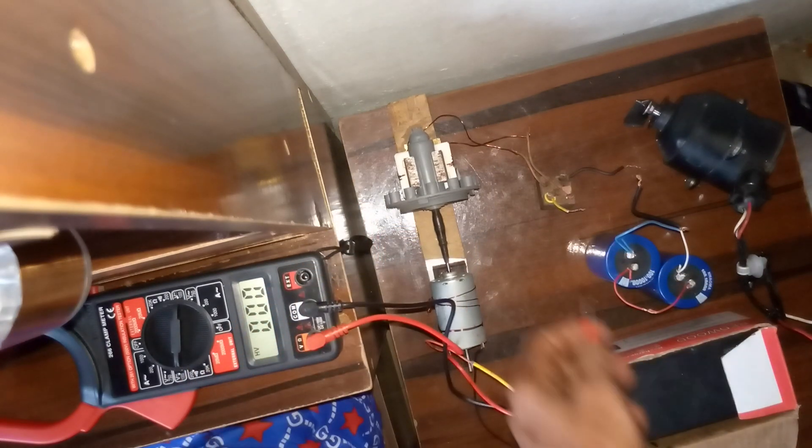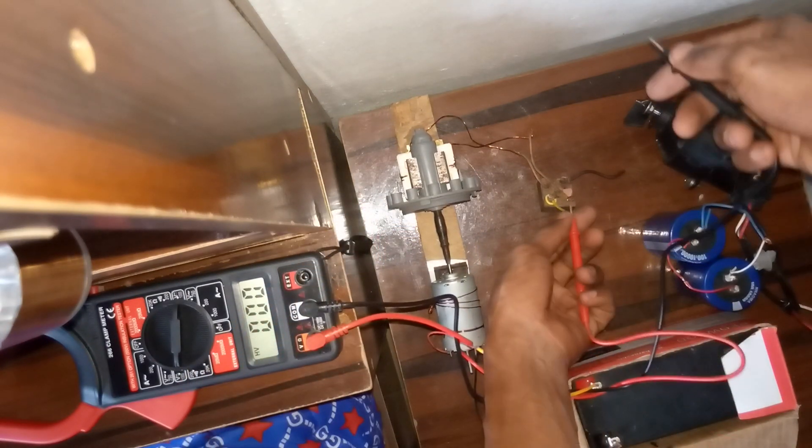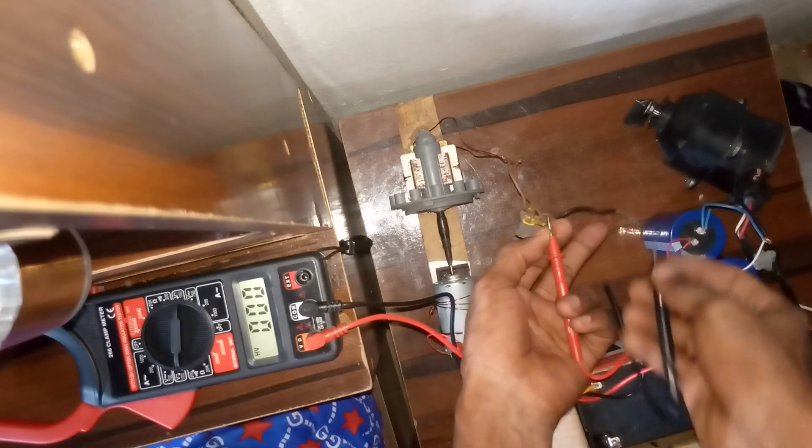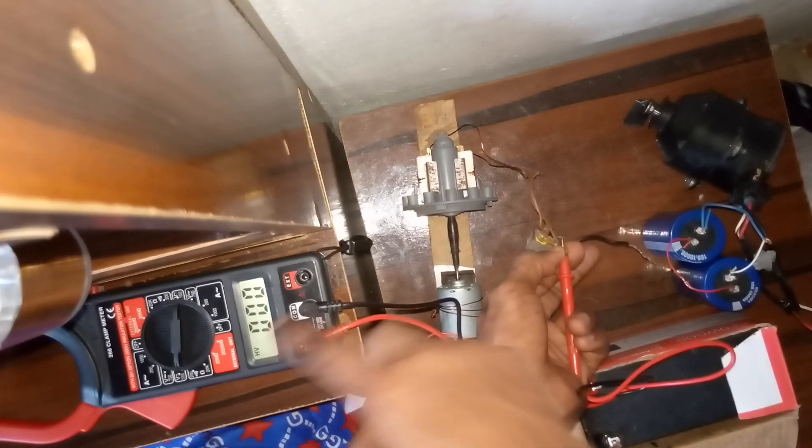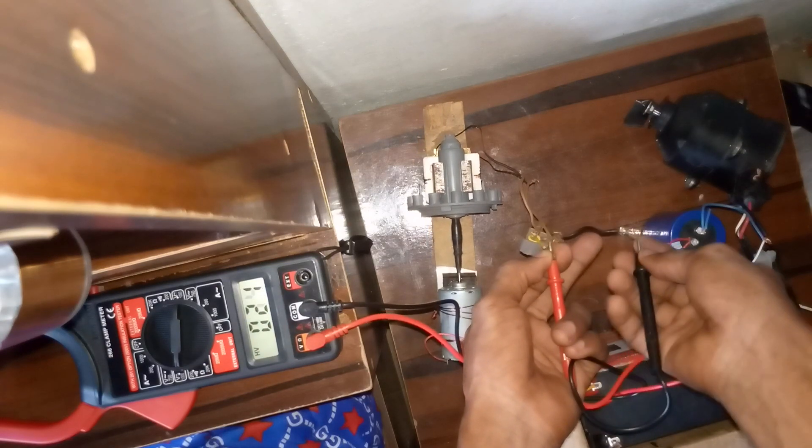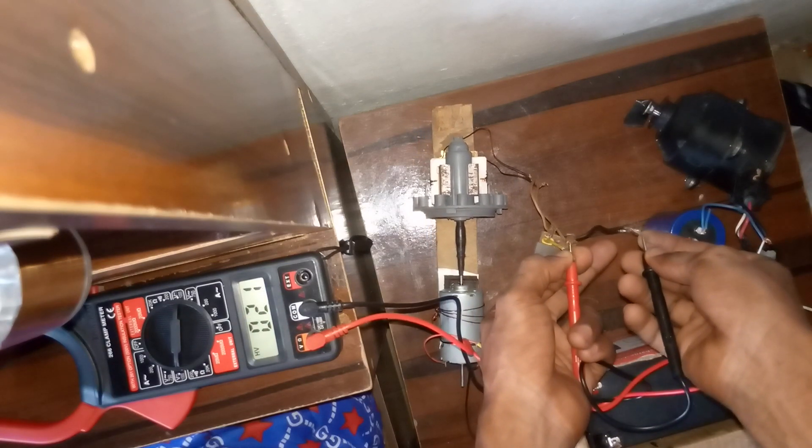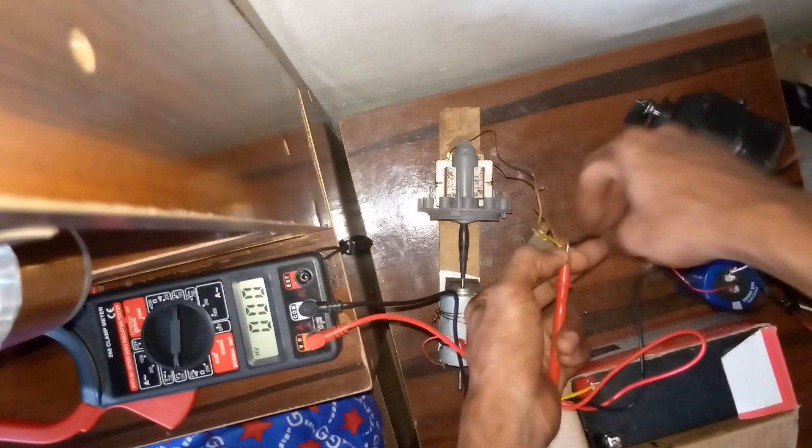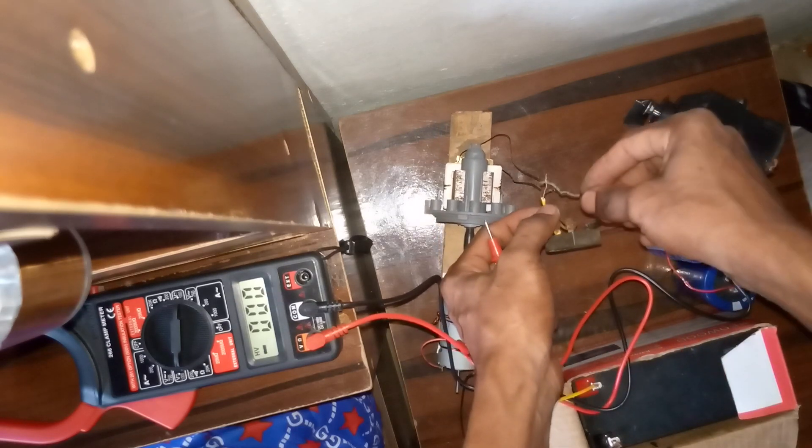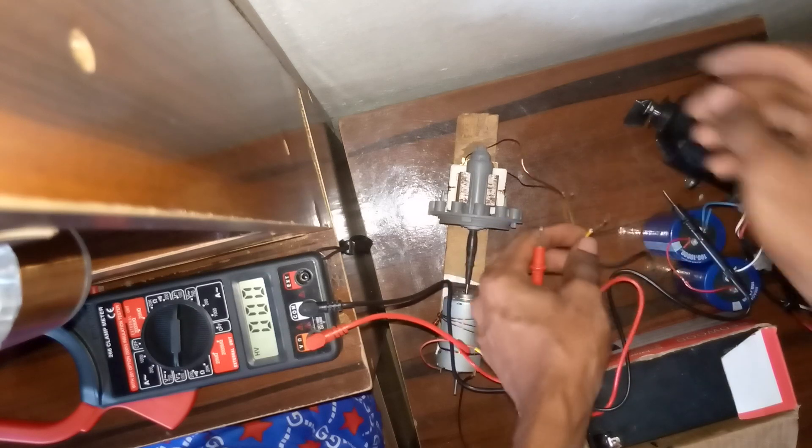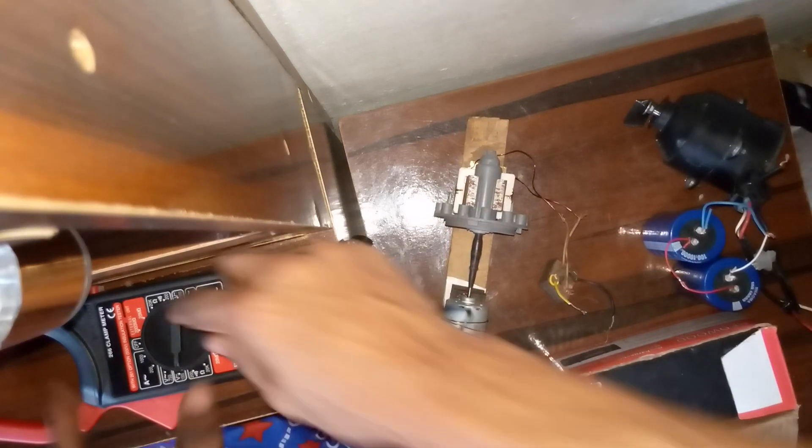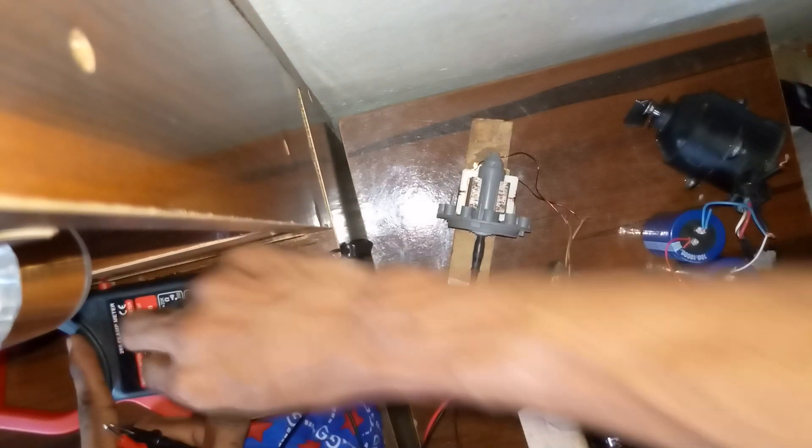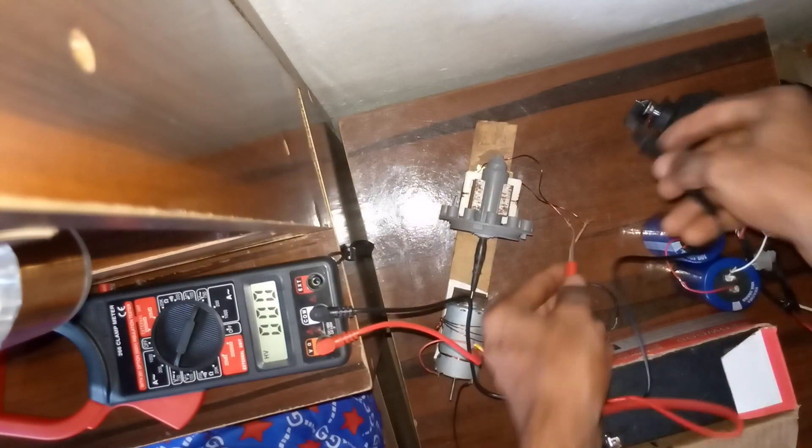The meter here, positive and negative. It's reading 21 volts DC because the battery is low, so I reduced the RPM. What you can see here is producing AC. Let's put it in AC.